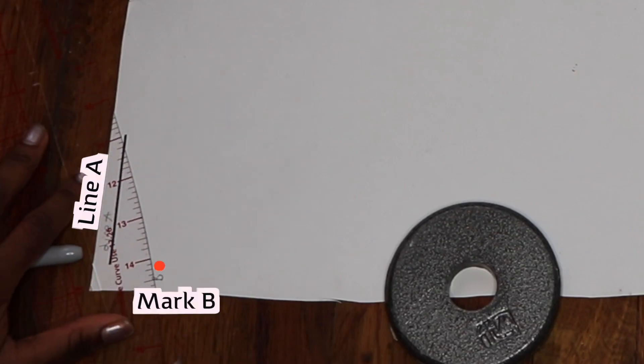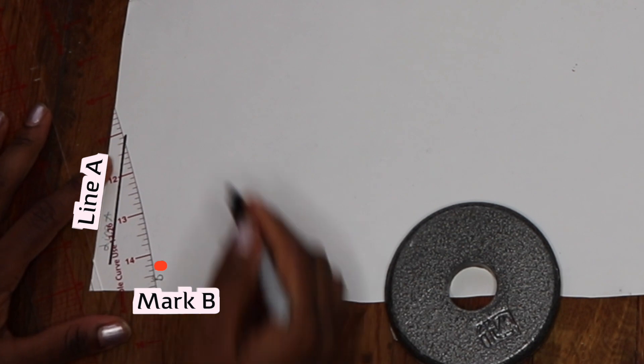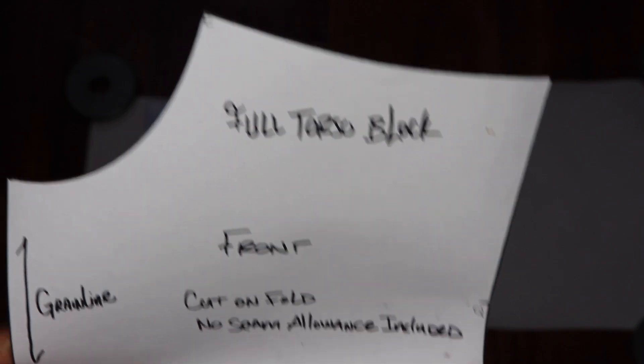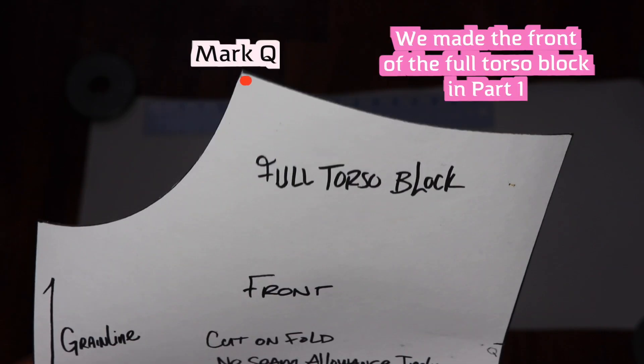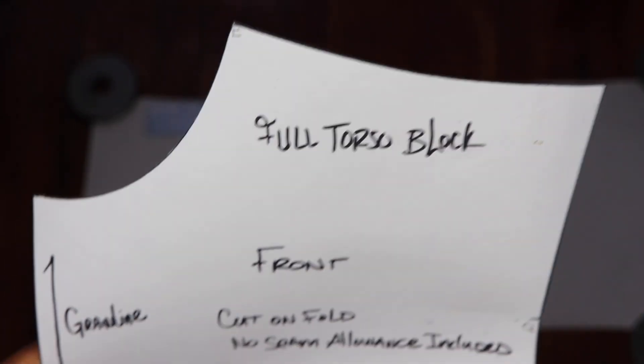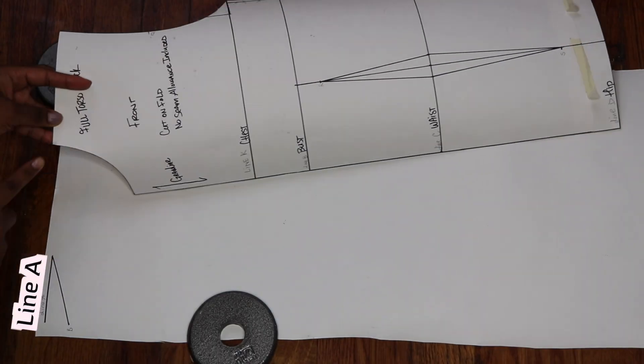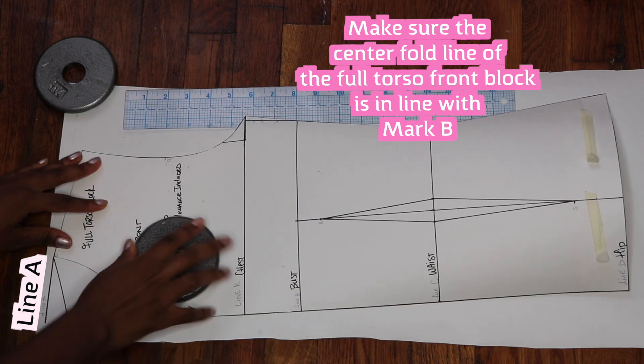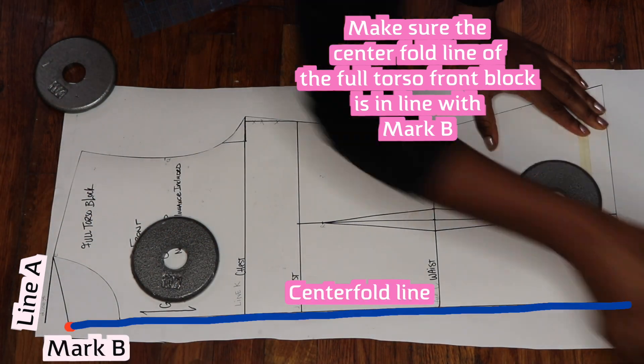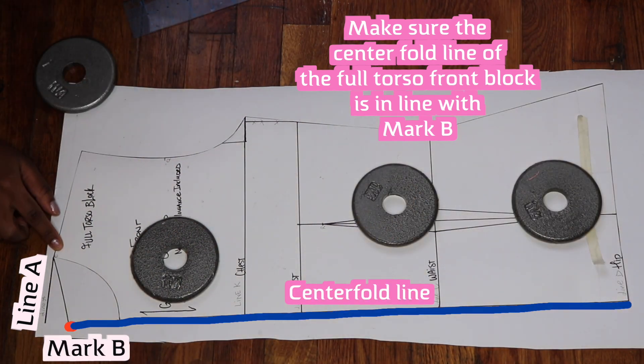Draw a curved line to connect the end of line A to point B. Place your full torso front block that we made in part one on top of the paper so that mark E from the front torso block, aka the edge of the neckline near the centerfold, is directly next to the end of line A.